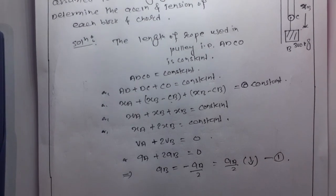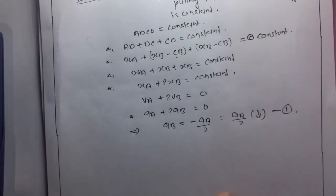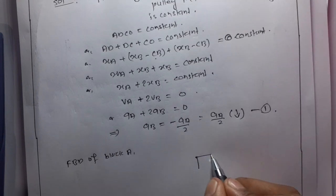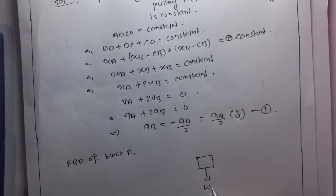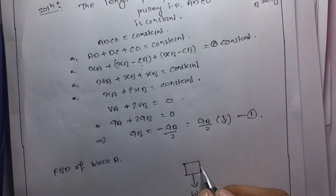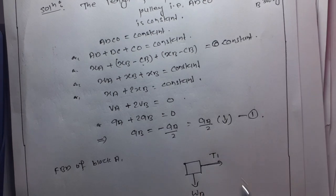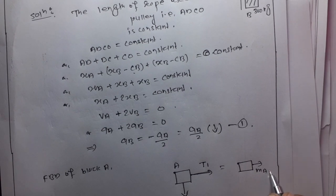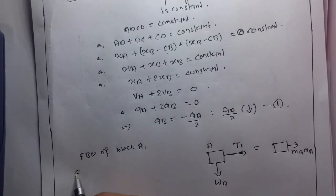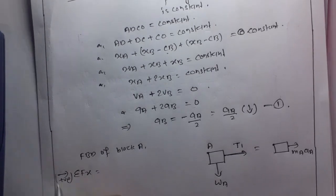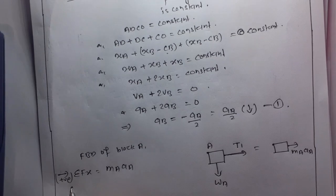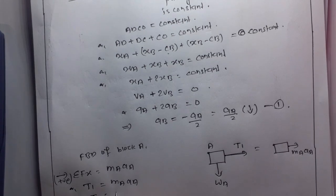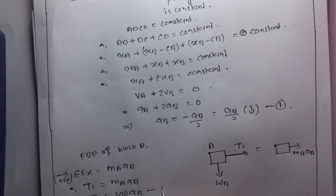Now the free body diagram of block A: weight acts downward, there is a normal reaction, and tension T1 acts horizontally. The block moves in the horizontal direction. Taking the x-direction as positive: summation Fx equals mA times aA, so T1 equals mA times aA. With mA equal to 100 kg, T1 equals 100 aA. This is equation two.